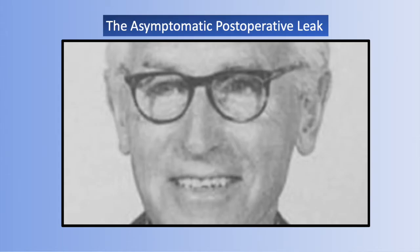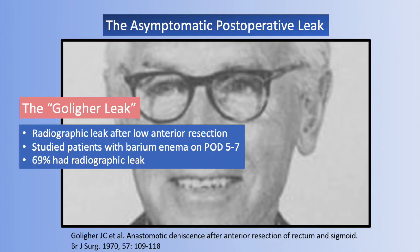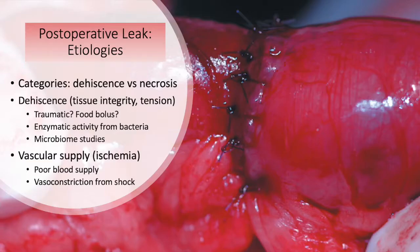What about the postoperative leak, specifically the asymptomatic post-op leak? The eponymous Golliger leak was born from the 1970 study that John Golliger and colleagues published, which tested fresh colorectal anastomosis with barium enemas on post-op days 5 through 7. 69% of these patients had radiographic leaks but were not necessarily symptomatic. So the question isn't who leaks, but rather who becomes symptomatic. Leaks happen either because of dehiscence or necrosis — the ends pull apart where there is poor tissue integrity, tension, or trauma. Some postulate enzymatic breakdown of the bowel ends from intestinal flora, supported by the notion that preoperative oral antibiotics have been associated with decreased leak rates. Microbiome studies may help elucidate the bacterial balance needed to heal an anastomosis.